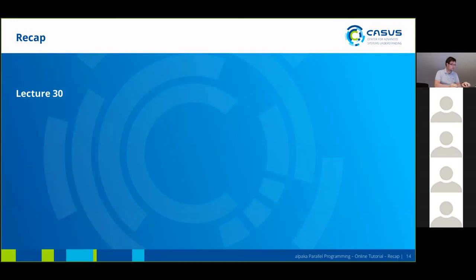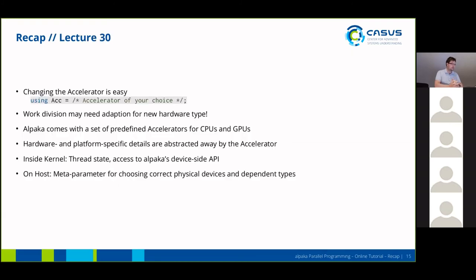Yesterday we saw how we can exploit the whole hardware at our disposal. We've seen how we can change accelerators just by changing a simple typedef. We also may need to adapt the work division — meaning the number of threads — depending on the new hardware type we are using. Alpaca comes with a set of predefined accelerators for CPUs and GPUs: a CUDA accelerator, a HIP accelerator, an OpenMP accelerator, threading building blocks, and so on.